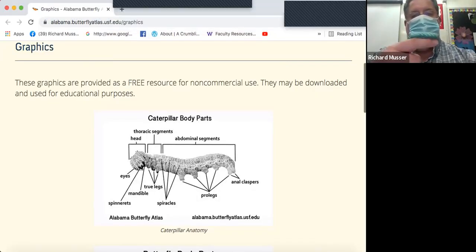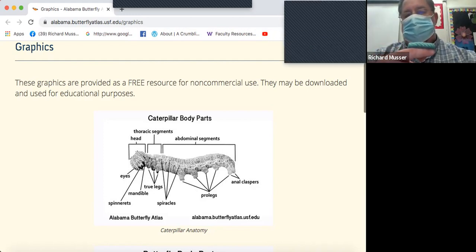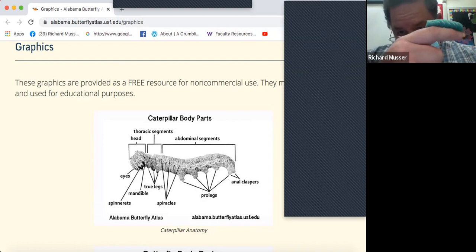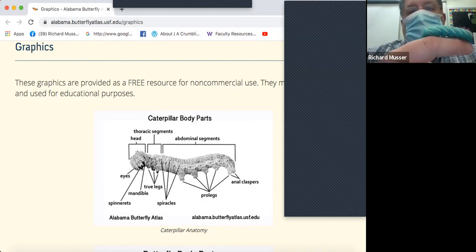Alright, so this is a caterpillar. There's many like it but this one's mine. This is also known as the Manduca sexta or the tobacco hornworm. The reason why they call it a horn is this little projection right here.